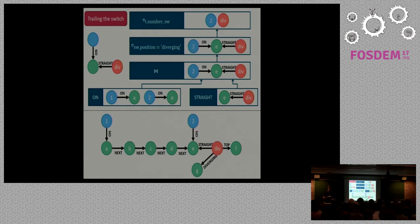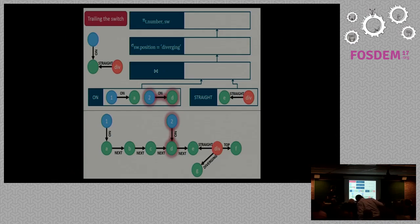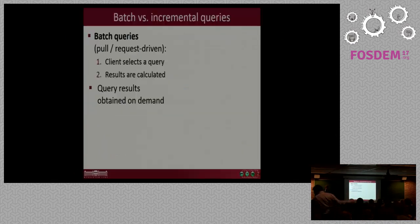So, what's the advantage of this approach? Well, if the train moves slightly, for example, it moves from E to segment D, then we only have to recalculate a small portion of the network. In this case, we propagate the change through the on indexer. And then there are no more matches in the join operator. So we have no more issues because the trailing the switch constraint is now not violated.